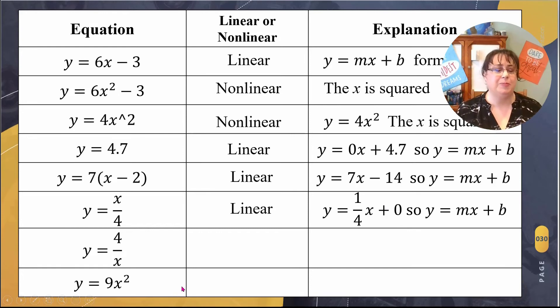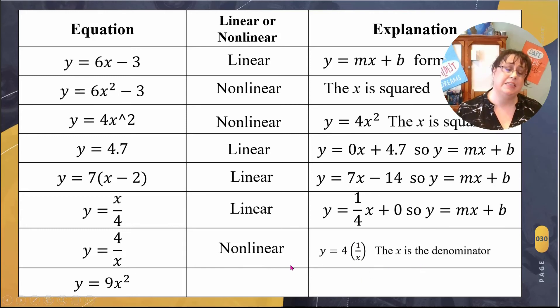The second one is where we have problems. Remember, nonlinear says I cannot have a variable in the denominator. That is a problem. So this is 4 times 1/x—the x is in the denominator, so this is nonlinear.